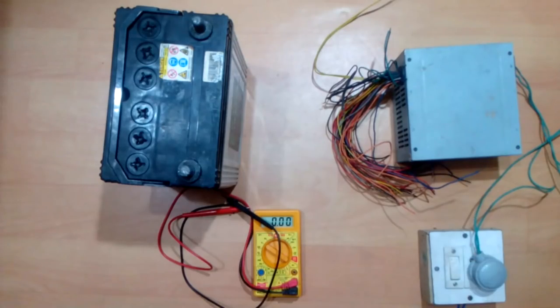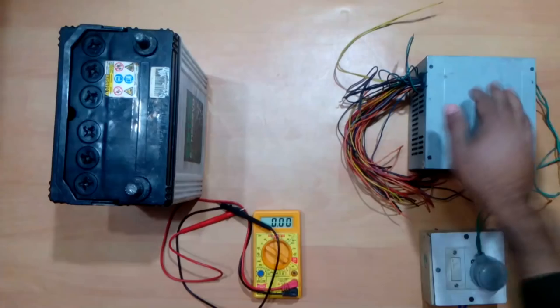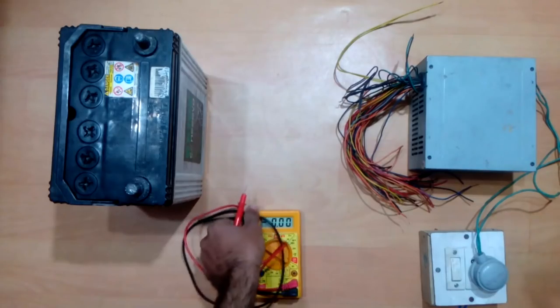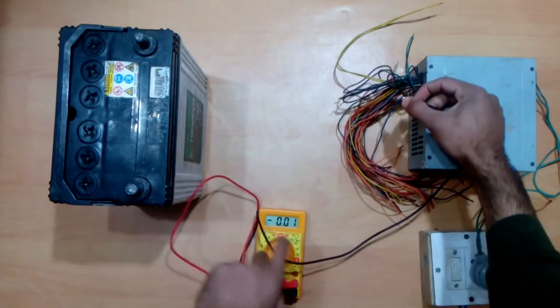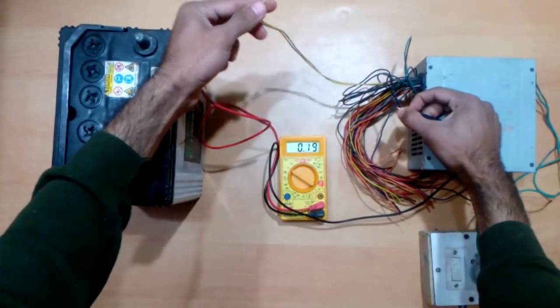As you know, there are a number of wires on a computer PSU. What we are interested in is a ground wire, the minus 12, the plus 12, and a plus 3.3 volts wire.